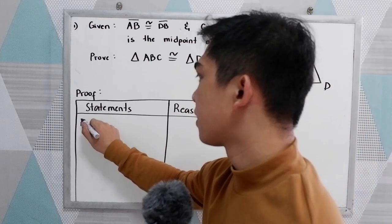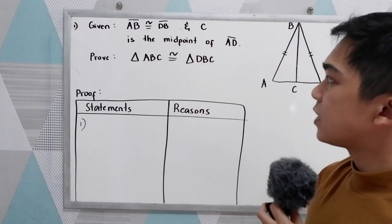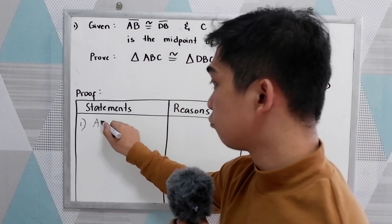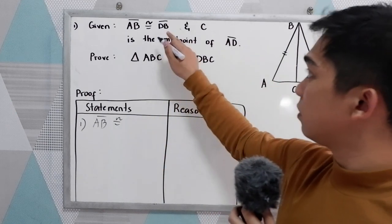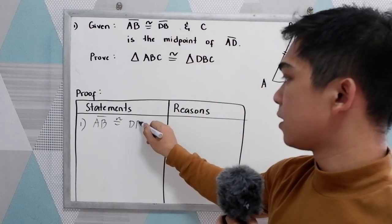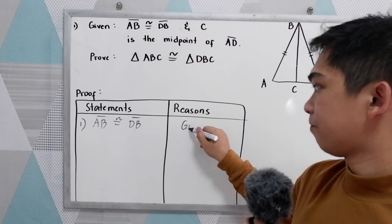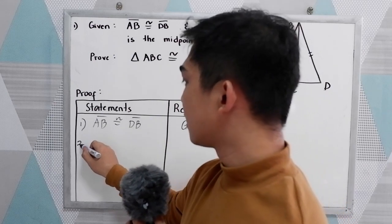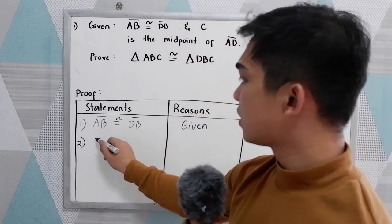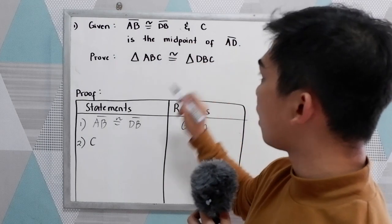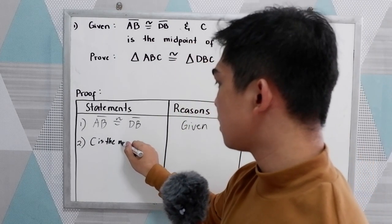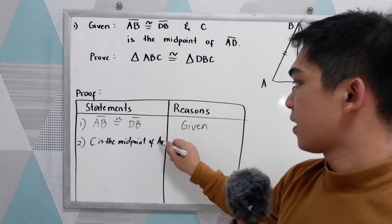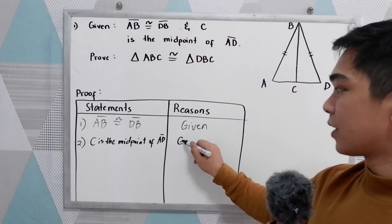So in our statements and reasons, we need to write first all the given. So our given is AB is congruent to DB. That is our first given. Reason: given. Second given: C is the midpoint of AD. That is also given.